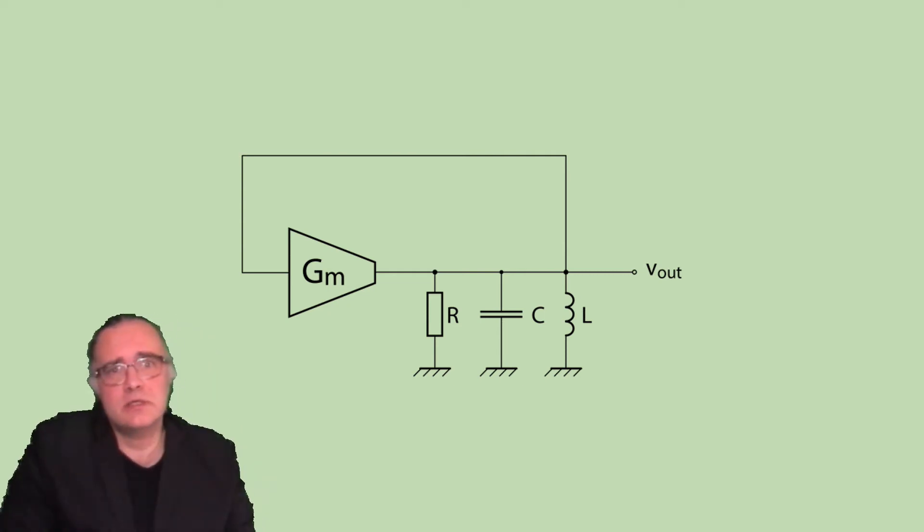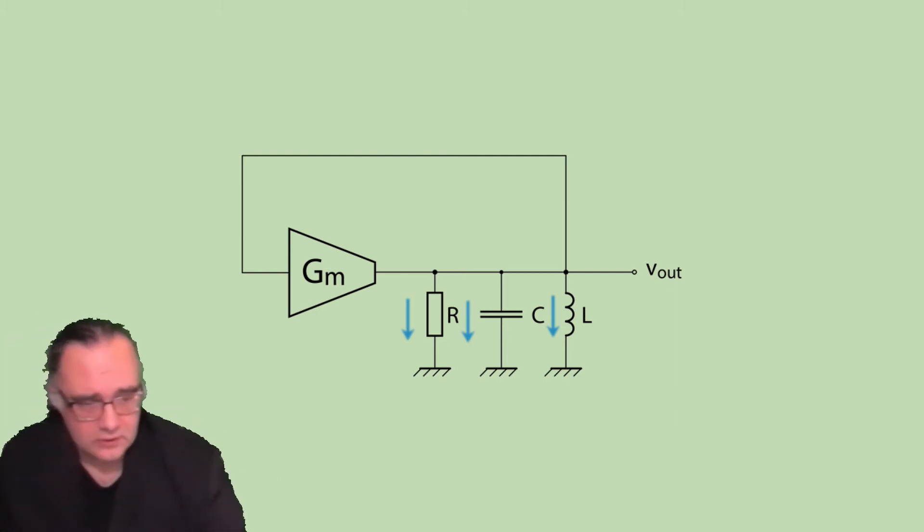Now transconductance stage transforms input voltage into output current. In this circuit the output current will go in the load. The output current of the GM stage will be transformed to voltage at the impedance of Vout or node Vout.